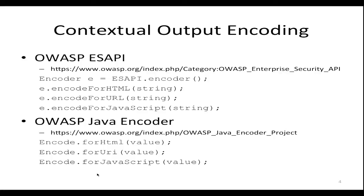The problem with these APIs and any other API is that we as security experts and developers have to go into the appropriate parts of our application, figure out what data is being sent back to the browser, and apply these appropriate methods at the appropriate time to output-encode the data going back out. It's a lot of work to do that, and that's one of the reasons why XSS is still so persistent.